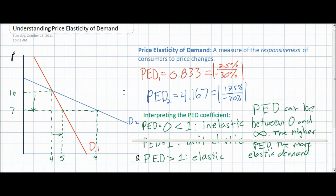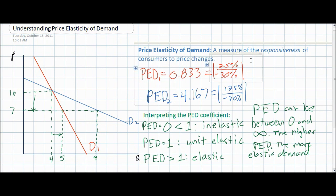This concludes our lesson on price elasticity of demand. In our next lesson, we'll talk about other forms of elasticity, including price elasticity of supply, income elasticity of demand, and cross price elasticity of demand.